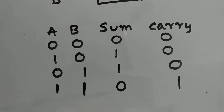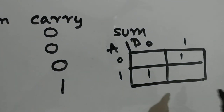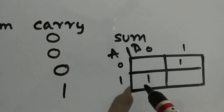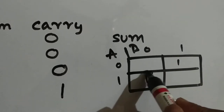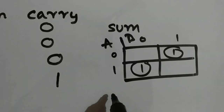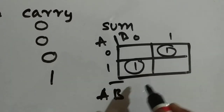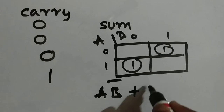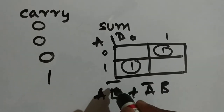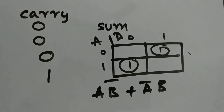From this truth table we can design the half adder. Now let's go to the K-map for sum. The ones appear diagonally, and the answer for it is AB̄ + ĀB — this term is AB̄ and this term is ĀB.